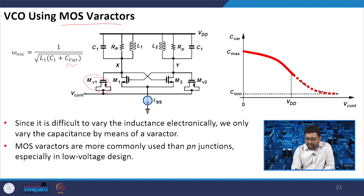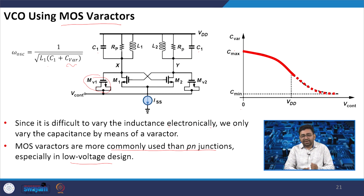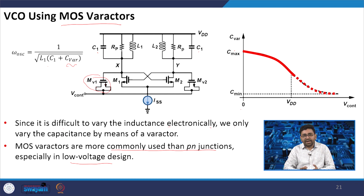If we plot the varactor capacitance from 0 to V, as we increase the voltage, the capacitance reduces to C_min. MOS varactors are more commonly used than P-N junction varactors for low-voltage design. This MOS capacitor is nonlinear, but combined with the fixed C1, the overall frequency tuning can be made approximately linear.